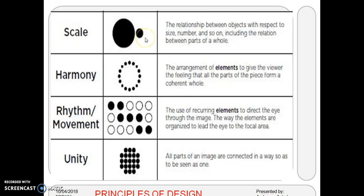Scale: the relationship between objects with respect to size and number, including the relation between parts of a whole. Harmony: the arrangement of elements to give the viewer the feeling that all the parts of the piece form a coherent whole — a total circle is there. Rhythm, or movement: the use of recurring elements to direct the eye through the image.